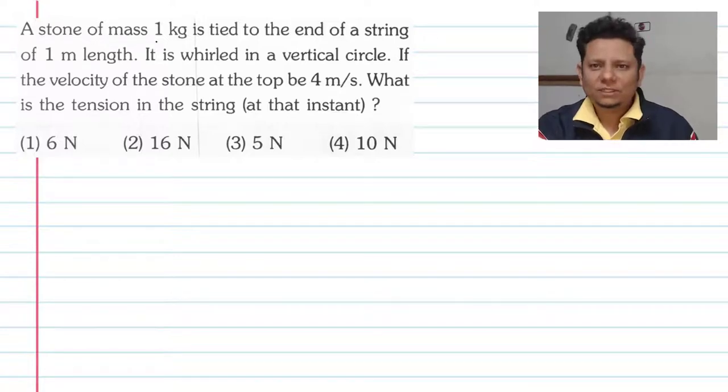Next question. It says a stone of mass 1 kg is tied to the end of a string of length 1 meter. It is whirled in a vertical circle. If the velocity of the stone at the top be 4 meter per second, what is the tension in the string at that instance?